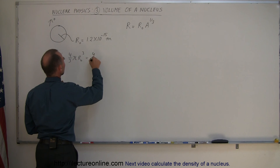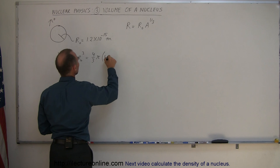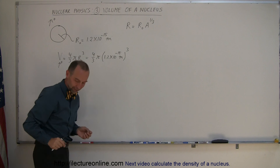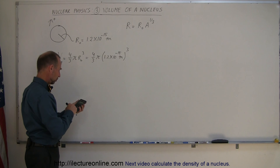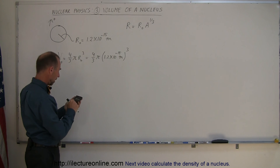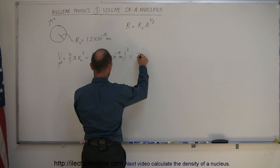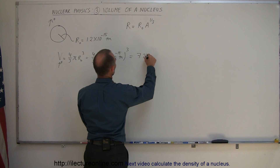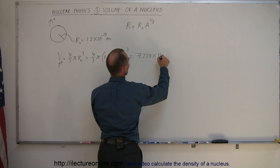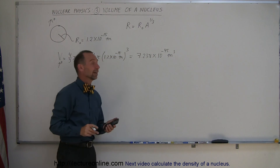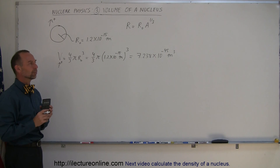Plugging those numbers in: this is equal to 4/3 times π times 1.2×10⁻¹⁵ meters, and we cube that. So, 1.2×10⁻¹⁵, let's cube that, then multiply times 4, divide by 3, and multiply times π. We get a volume of 7.238×10⁻⁴⁵ cubic meters. 10 to the minus 45 is a very, very small number, but that's the volume of a single proton.